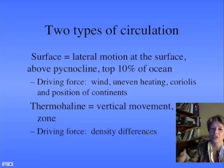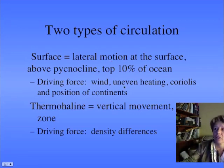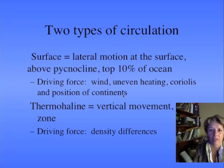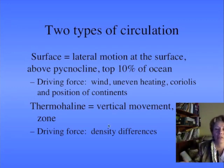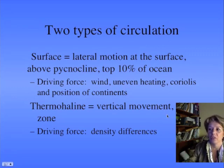Now we'll compare surface circulation — the lateral motion of surface water, the currents above the pycnocline. Wind, uneven heating, the Coriolis effect, and the position of the continents influence these surface currents. But there is also some vertical circulation, which is very rare. It's called thermohaline or vertical circulation, and it's driven by density — the denser water sinks.